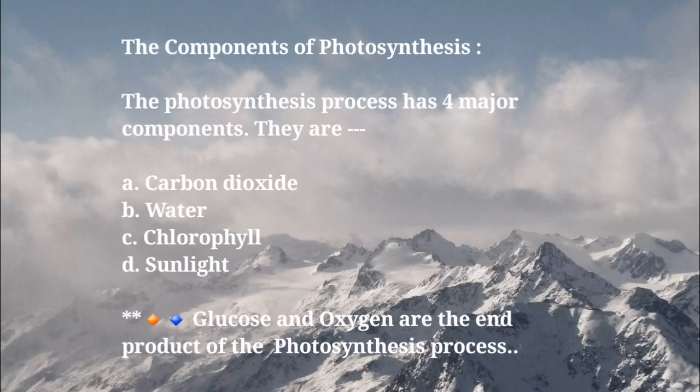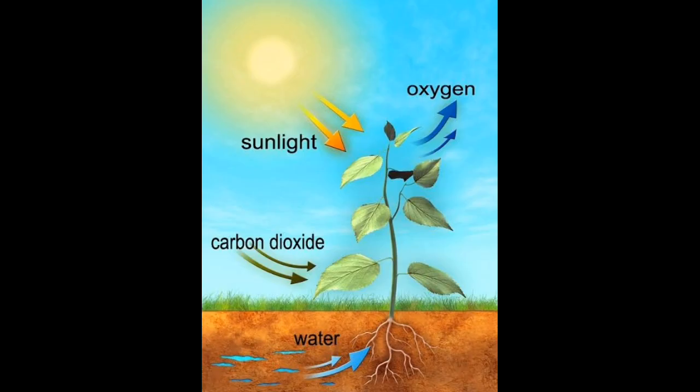The components of photosynthesis: the photosynthesis process has four major components — a) carbon dioxide, b) water, c) chlorophyll, and d) sunlight. Glucose and oxygen are the end products of the photosynthesis process. From the atmosphere, plants take in carbon dioxide; from the sun, they take sunlight; and through the roots they absorb water — then they prepare glucose as food and release oxygen into the atmosphere.